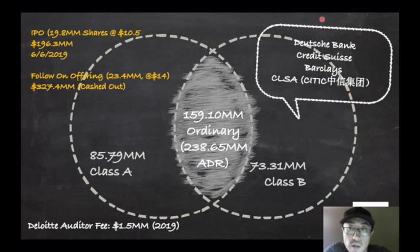So these are the companies that are responsible for vetting the concept and then also come up with a valuation for its IPO. The company currently has 85 million Class A shares and 73 million Class B shares. So for a total of 159 million shares, there is currently 238 million ADRs outstanding.